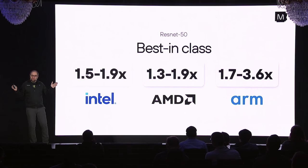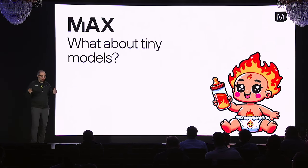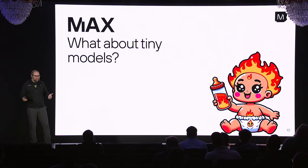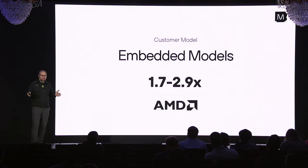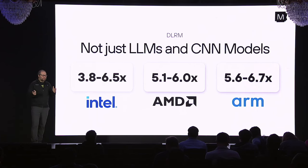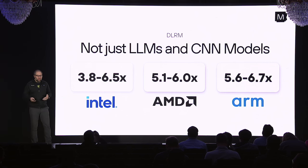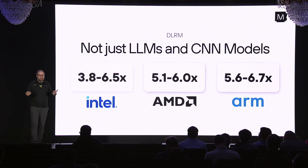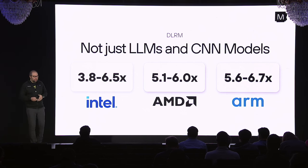Obviously we want to look at baby models, tiny models — things you see in embedded systems. So how does Max work on that? For those cases we looked at a customer model more for the embedded use case. Comparing against XLA with full optimizations, we get up to 2.9x speedup on AMD. And Max does not just work on LLMs and CNNs. DLRM is a common recommender model that's very important in ads, Facebook, and other use cases. We're getting massive speedup compared to ONNX runtime and TensorFlow for these recommender models.